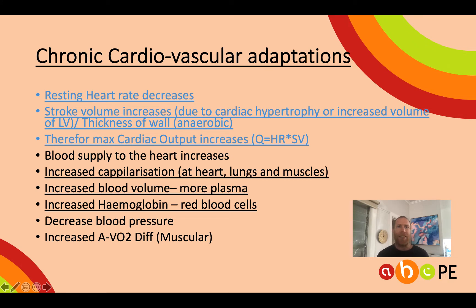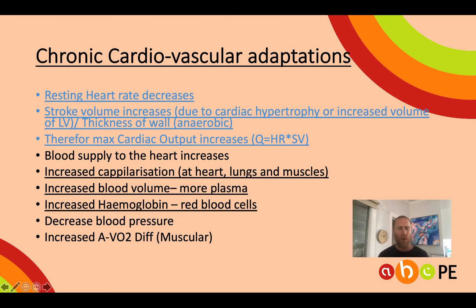There are quite a lot of cardiovascular adaptations. Those in blue are cardiac adaptations — related to the heart. Those in black are vascular adaptations — related to blood or blood vessels. The underlined ones are the ones we'll go through in detail. We'll cover the a-VO2 difference later with muscular adaptations, as it can be either muscular or vascular.